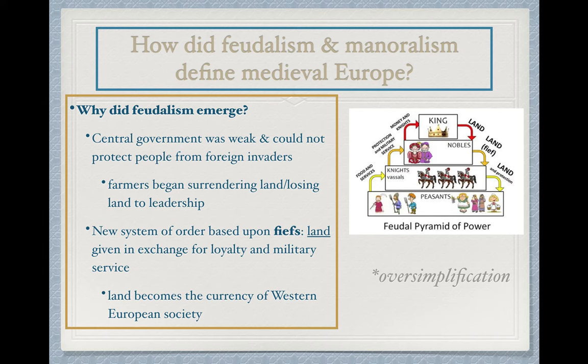The new system order that emerged here is a system based upon what are called fiefs. A fief is when land is given in exchange for military service and loyalty — a direct exchange. The people of greater power would give a plot of land, and in return, the person receiving that land must pledge loyalty, allegiance, and provide military service when needed.